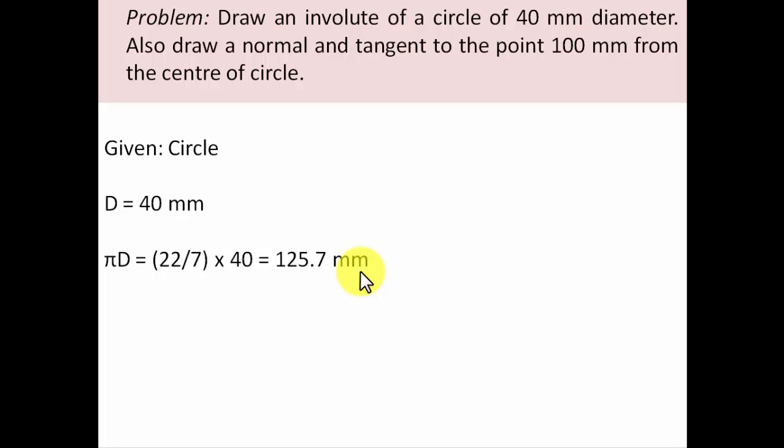If you look at the definition of involute, we speak of winding or unwinding a piece of thread or string. But no such string length has been given to us in this problem, so we're going to assume the string length equivalent to that of the circle circumference, which has been worked out as 125.7 mm.